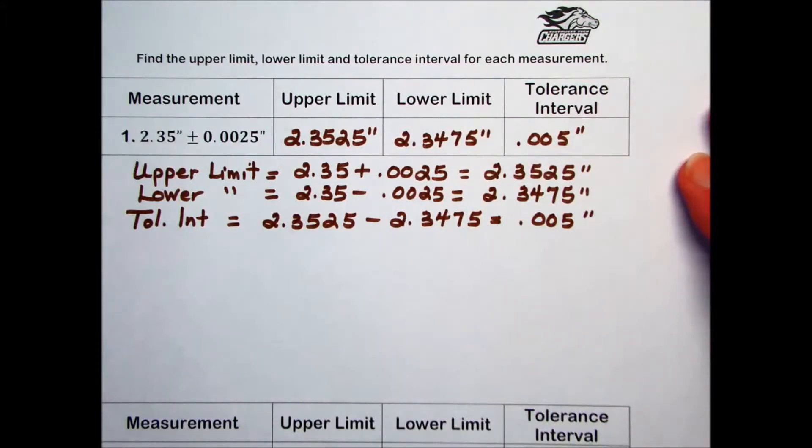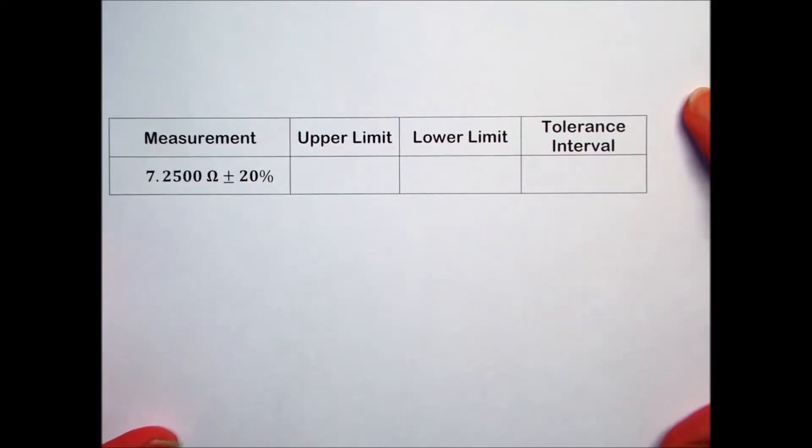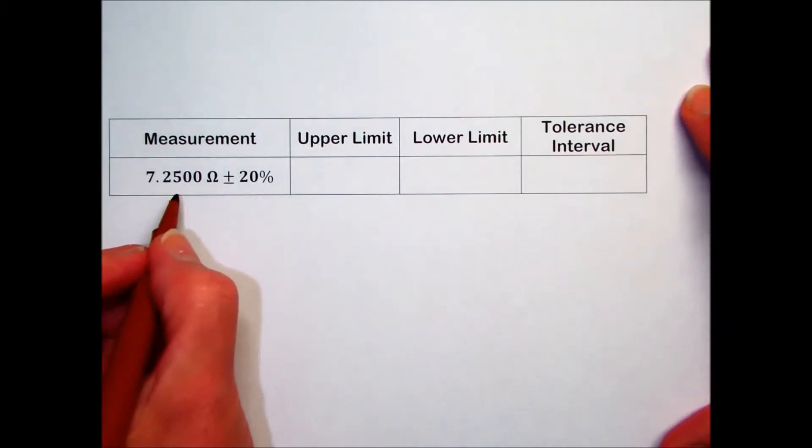The next one I want to take a look at is problem number seven. Here they're giving us the standard measurement of 2500 ohms plus or minus 20 percent.